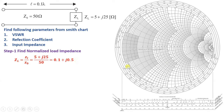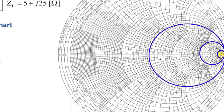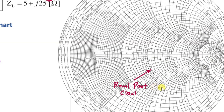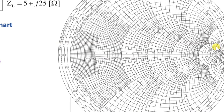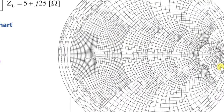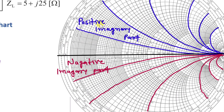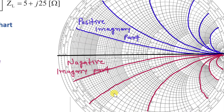On this Smith Chart, there are two different types of circles. The circles identify the real component, and the half circles identify the imaginary component of impedance. The upper portion of the imaginary component shows positive imaginary values, and the lower portion of the Smith Chart shows negative imaginary components.